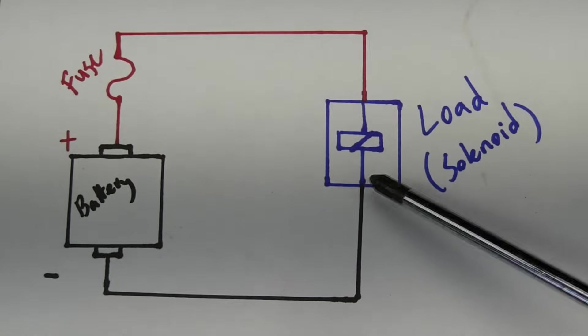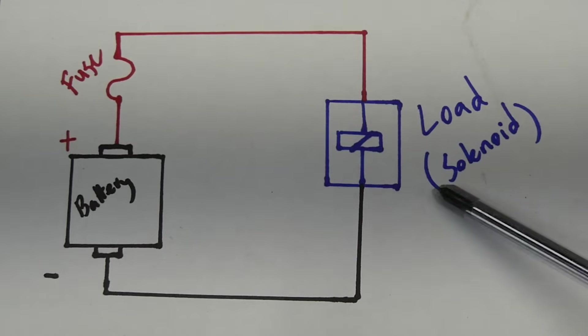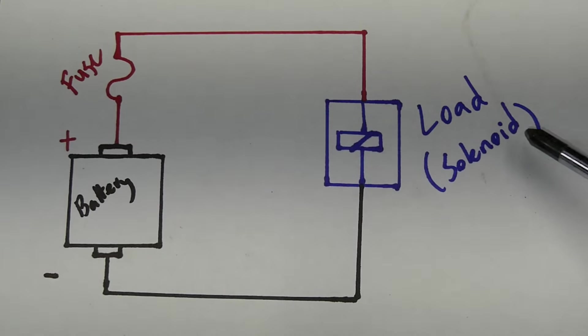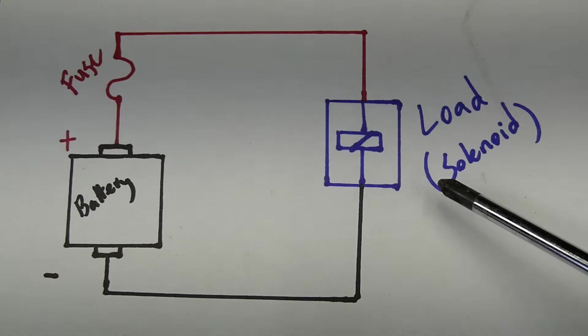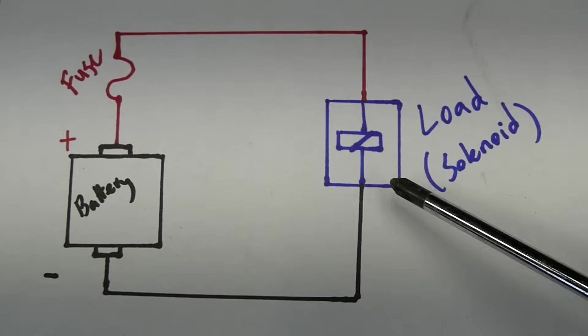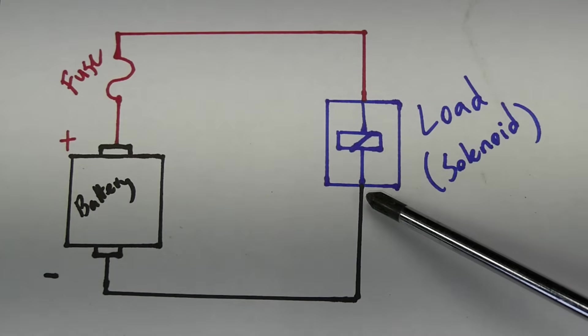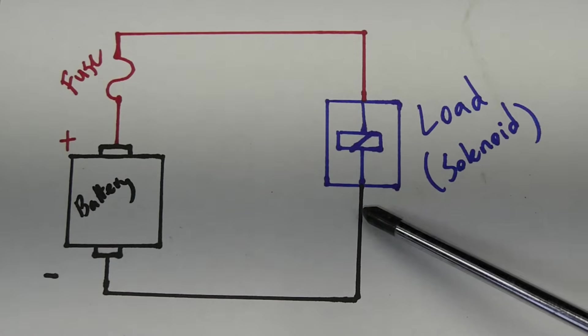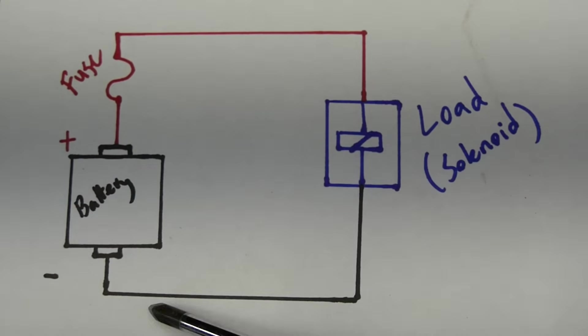Then after the fuse, you're going to have your load. This could be a solenoid sensor, your headlight bulbs, your windshield wipers, anything that uses current is going to be considered a load. And then after the load, you're going to have the ground or the negative side.